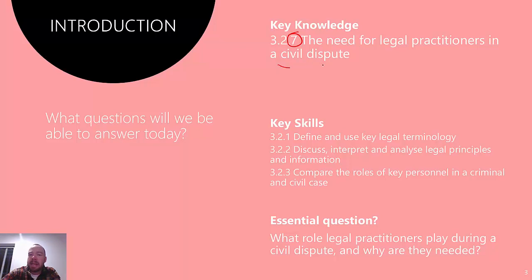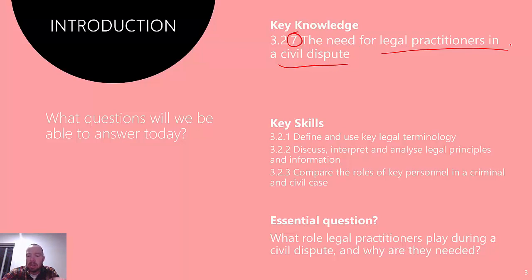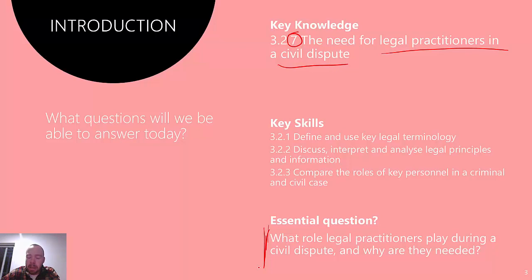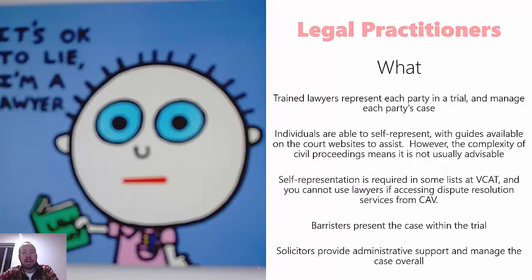Video 327 — we're talking today about the need for legal practitioners in a civil dispute. This is really building off that last video on the roles of key personnel in a civil dispute, much like it did in Area 3.1. So there'll be connection between these two videos, particularly around the key skills. We won't go into as much detail in this video just because we've covered those skills in the last one. Hopefully by the end of this, you're able to explain what lawyers are going to do for someone in a civil matter and really get across the point of why, if someone does want to pursue a civil matter in any way, shape or form, they should be getting themselves a legal practitioner — it's advised, more or less. Same structure as in 3.1.